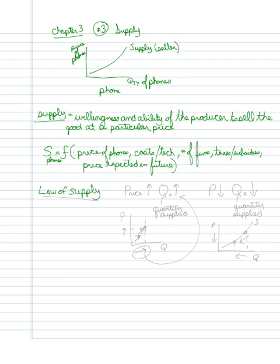What we see here for the law of supply is that as the price goes up, firms are willing to sell more. And as the price falls, firms don't want to sell as much.